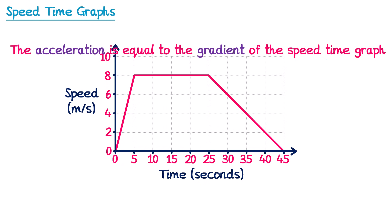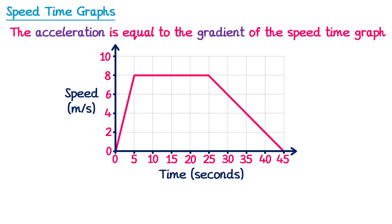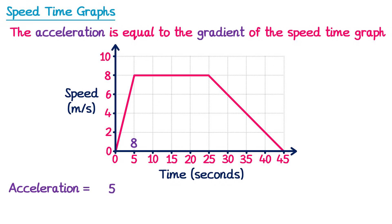Let's start with the first section of the race, between 0 and 5 seconds. We work out the gradient by drawing a gradient triangle. The change in y goes from 0 to 8, so that's 8, and the change in x goes from 0 to 5, so that's 5. The gradient — which is the acceleration — is 8 divided by 5, which is 1.6.